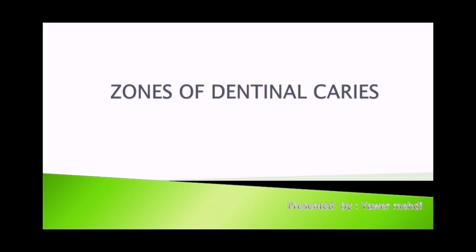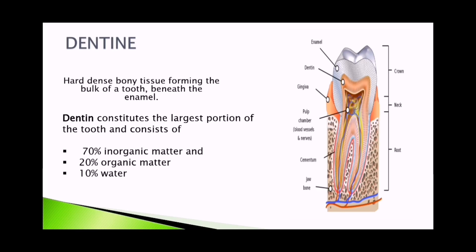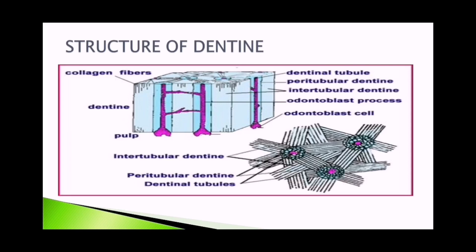Today we will discuss the zones of dentinal caries. First, dentine is a hard and spongy tissue forming the bulk of the tooth beneath the enamel. Dentine constitutes the largest portion of the tooth and consists of 70% inorganic matter, 20% organic matter, and 10% water.